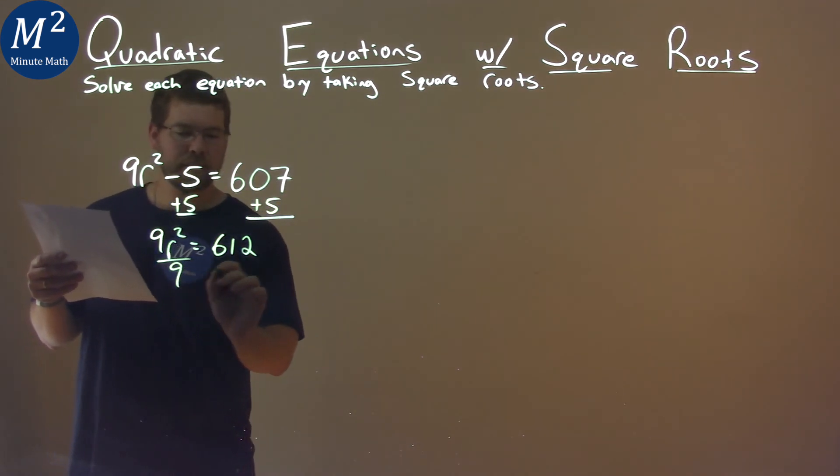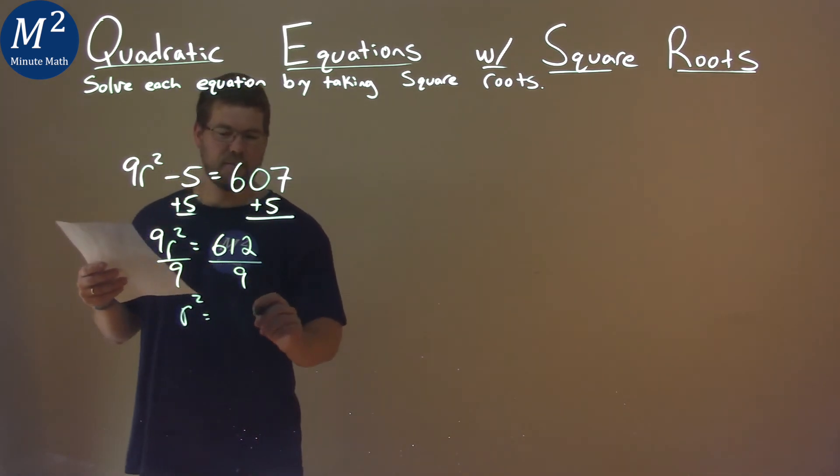Divide both sides by 9, and r squared equals 612 divided by 9 comes out to be 68.